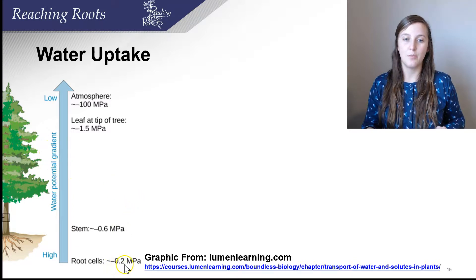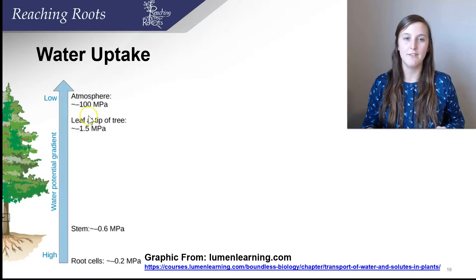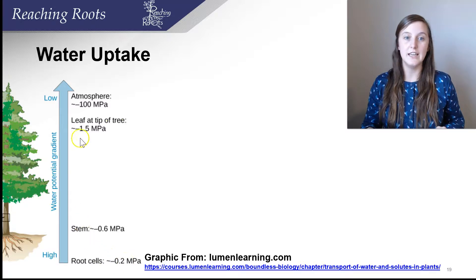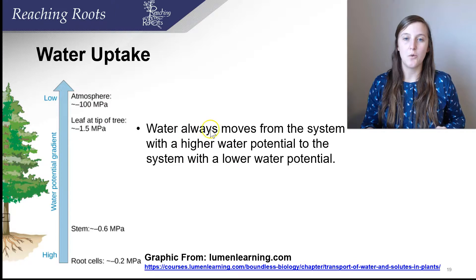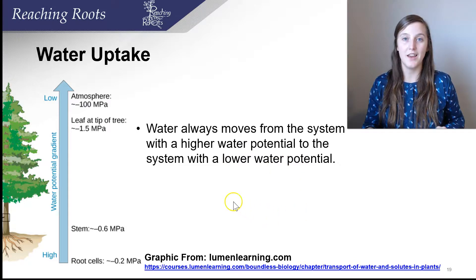You'll see that there's a negative 0.2 MPa water potential at the roots, and then it gets more negative — 0.6, 0.1, 0.5 — all the way to negative 100 at the leaf. So it's going from low to even much lower. Water always moves from a system with a high water potential to a system with a low water potential, just like molecules move from a high concentration to a low concentration.